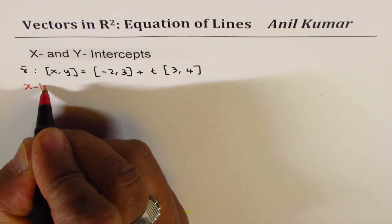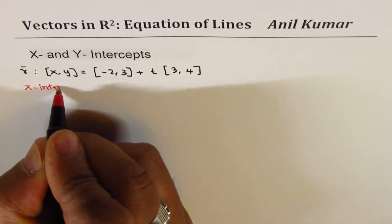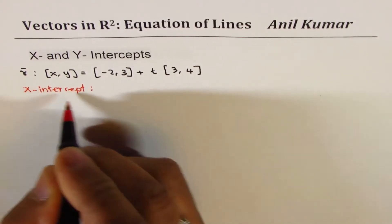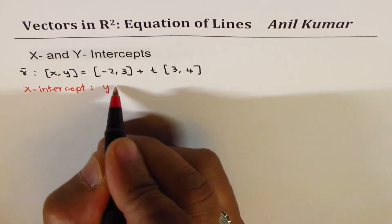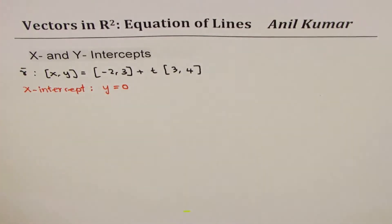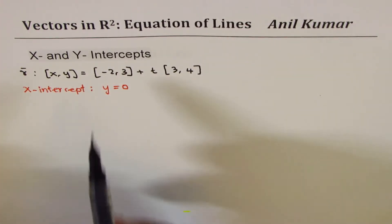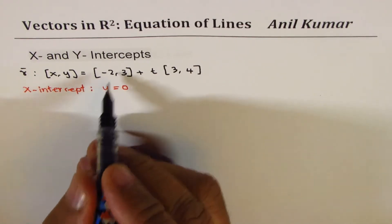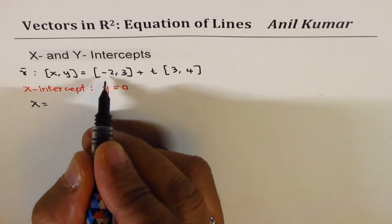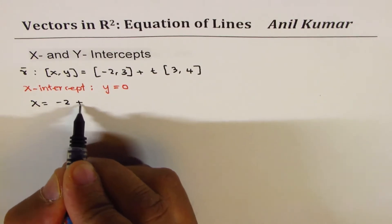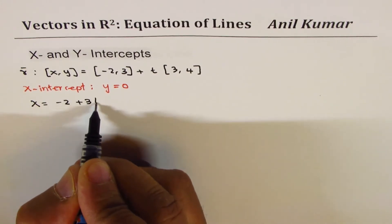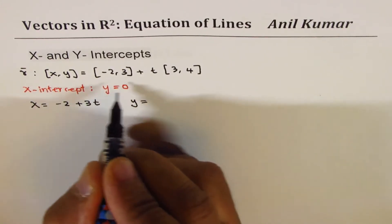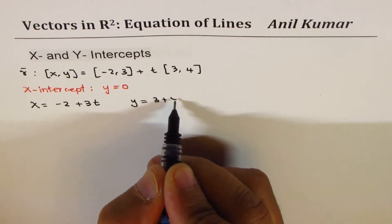So if I say x-intercept, it means y equals to 0. The best approach is to write this in parametric form. So I could write x as equal to minus 2 plus 3t, and I could write y as equal to 3 plus 4t.